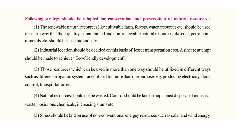The fourth point: natural resources should not be wasted. Control should be laid on unplanned disposal of industrial waste, poisonous chemicals, and increasing slums. Even resources that are currently abundant should not be wasted, as they can become scarce in the near future — for example, water. Planning should be done about dumping of industrial waste and solving the problems of increasing slum areas. The fifth point: stress should be laid on use of non-conventional energy resources such as solar energy and wind energy, which are never-ending resources.